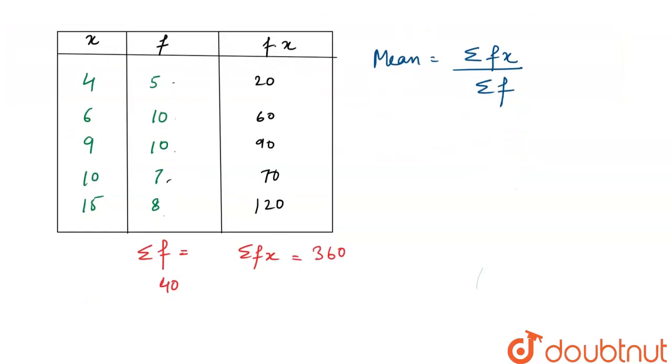Now we have to find mean. We have sigma fx that is 360 upon 40, which is our summation of f. This gets cancelled. We know that 4 into 9 is 36, so mean equals 9. This is our final solution. Thank you.